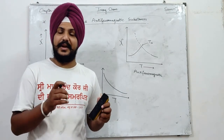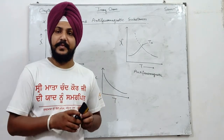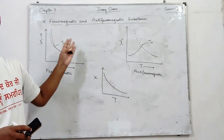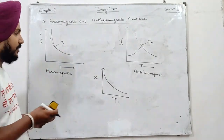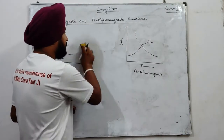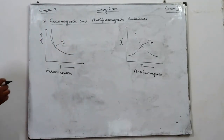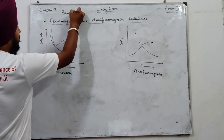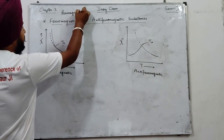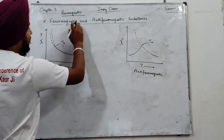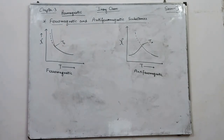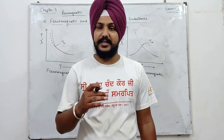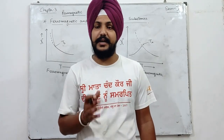लेकिन हमें कुछ ऐसे भी paramagnetic substances मिले जो इस simple behavior को show नहीं करते हैं, वो complex behavior show करते हैं। Actual में हम paramagnetic substances की types ही बढ़ा रहे हैं। Paramagnetic substances के लिए जो दो complex behaviors की types हैं, उनके नाम हैं ferromagnetic और anti-ferromagnetic substances — ये दोनों paramagnetic substances के अंदर ही आती हैं।